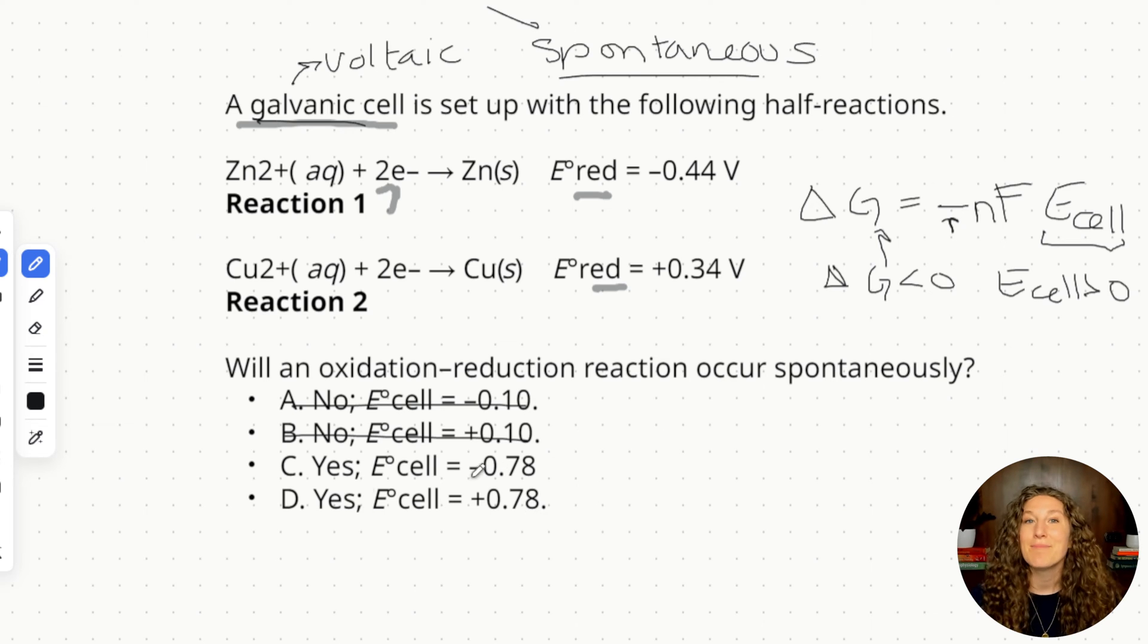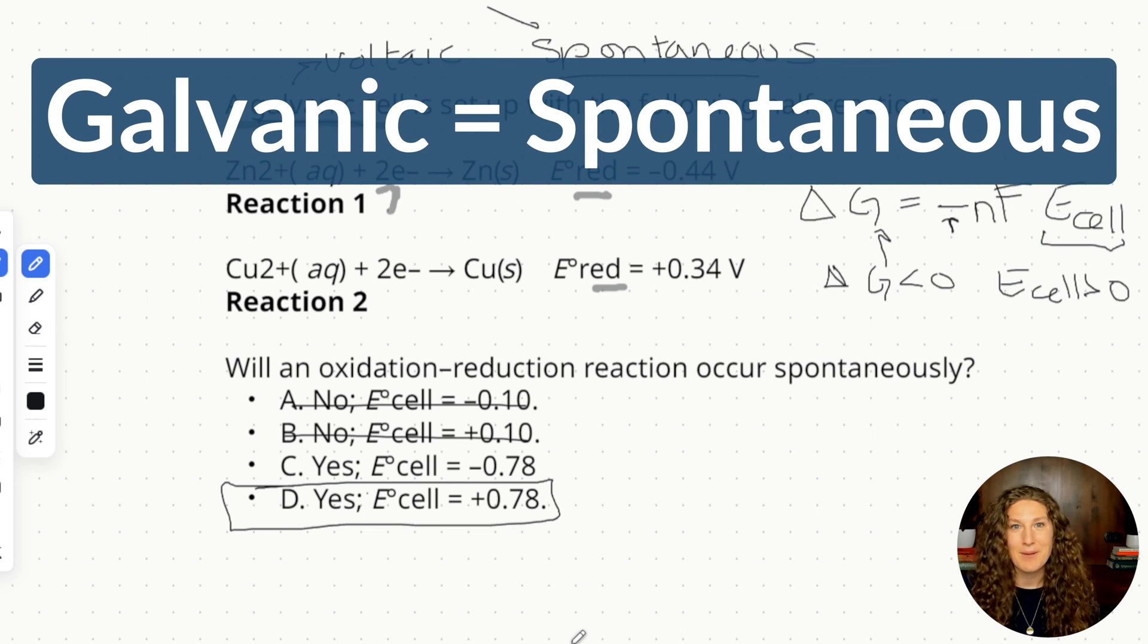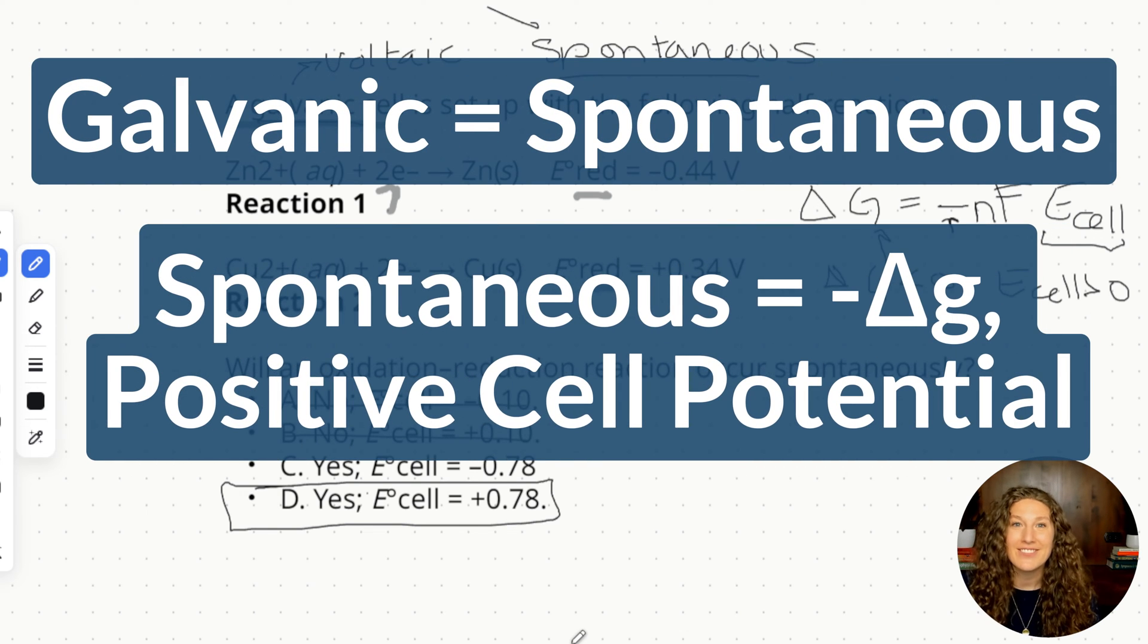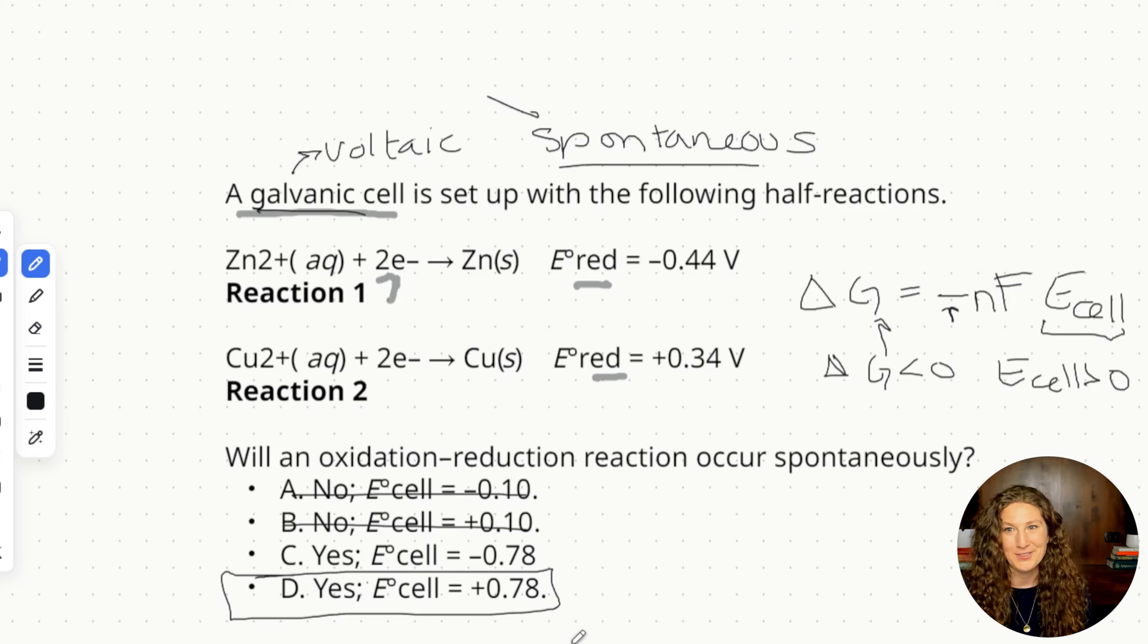So without even doing math we can know that our E cell has to be positive so we can choose D. So with these types of questions a couple simple rules: galvanic cell equals spontaneous, spontaneous means negative delta G and positive overall cell potential will get us our answer quickly and effectively. You can write in the comments if you have any questions about this first practice problem and let's move on to practice problem number two.